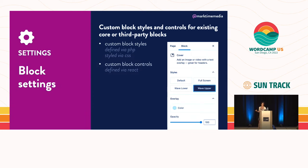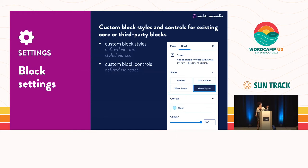We also have options as theme designers to extend the user interface for existing blocks by creating additional styles or settings. This helps reduce the need to build a new block. If you wish you had a paragraph block that just looked a certain way, instead of creating a custom block, you could create a style so the end user can select it. I showed an example for the cover block — a default style plus a few others with special things, and the user just clicks on it and it loads. You can also create custom block controls for existing blocks. Block styles can be done in PHP; custom controls require React.